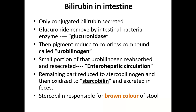After secretion into the bile, bile reaches the intestine — specifically the small intestine — where it is further metabolized by various enzymes present in the intestinal lumen, mainly glucuronidase, which removes glucuronic acid from conjugated bilirubin, producing unconjugated bilirubin that is further metabolized into urobilinogen. Urobilinogen is a colorless compound, but its oxidized product urobilin is a colored compound. It is further metabolized into stercobilinogen, and its oxidized product stercobilin is also a colored compound. Stercobilin is excreted in the stool and gives it the brown color.